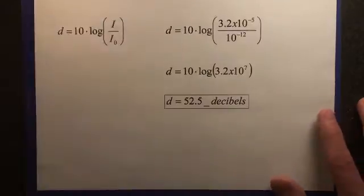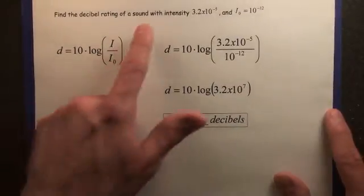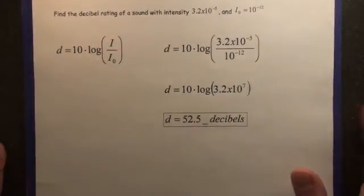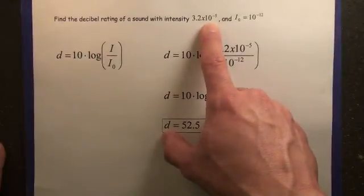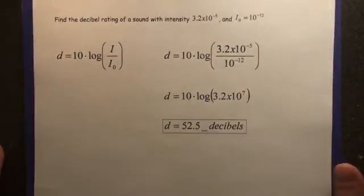It's that easy. All right, next one, find the decibel rating of a sound with intensity 3.2 times 10 to the negative 5, and I sub zero equals 10 to the negative 12.